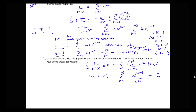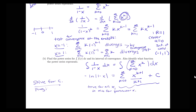We're not quite done because I need to solve for C. I know this equation is true for all x, so I can plug in a particular value. Plugging in x equals 0: the left side gives negative log of 1, which is 0, and the right side gives a sum of 0, so C equals 0.